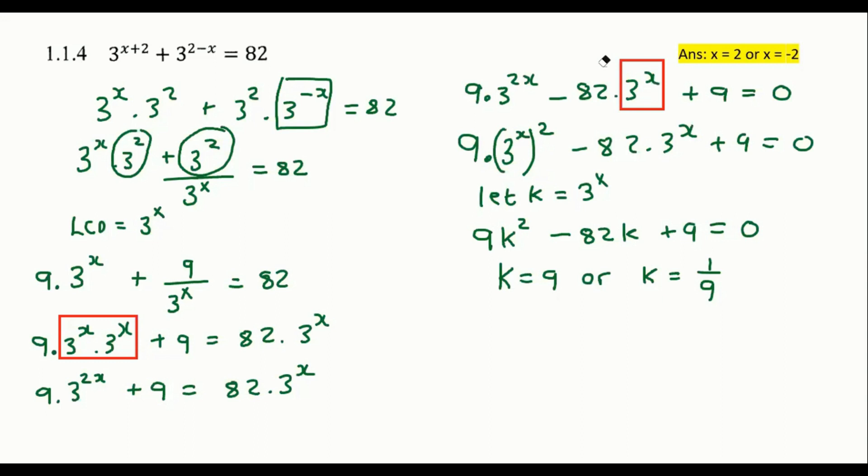So now guys we now know that K is nine and K is one over nine, but then remember that K is actually equal to three to the power of X. So what I'm going to do now is divide my page in half and I'm going to say three to the power of X equals nine and three to the power of X equals to one over nine.